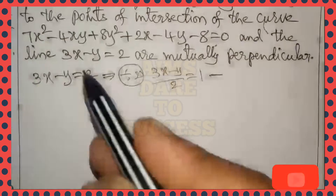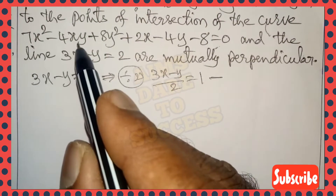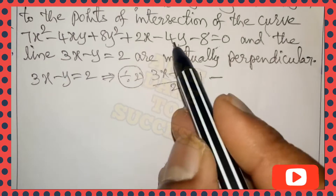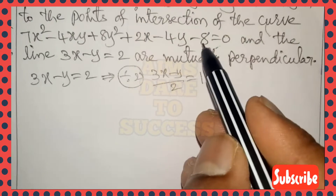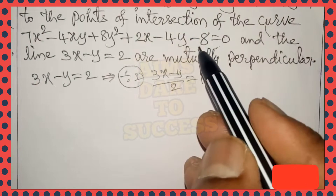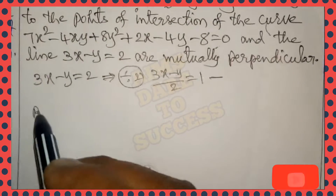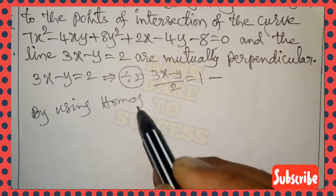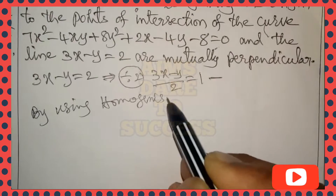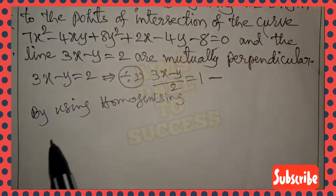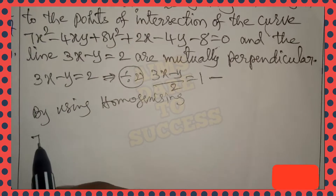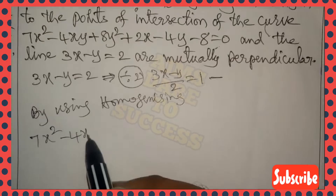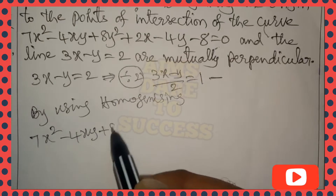According to the question, the line is 3x-y=2. The right side should equal 1, so dividing by 2 we get (3x-y)/2=1. By using homogenizing — homogenizing means substituting into 7x²-4xy+8y²...